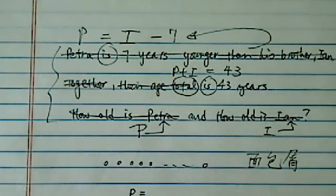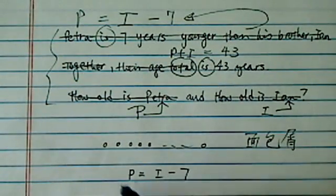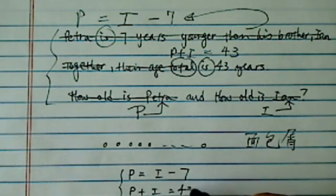We have two equations, two unknowns. First one says P equal to I minus seven. Second one says P plus I is 43.